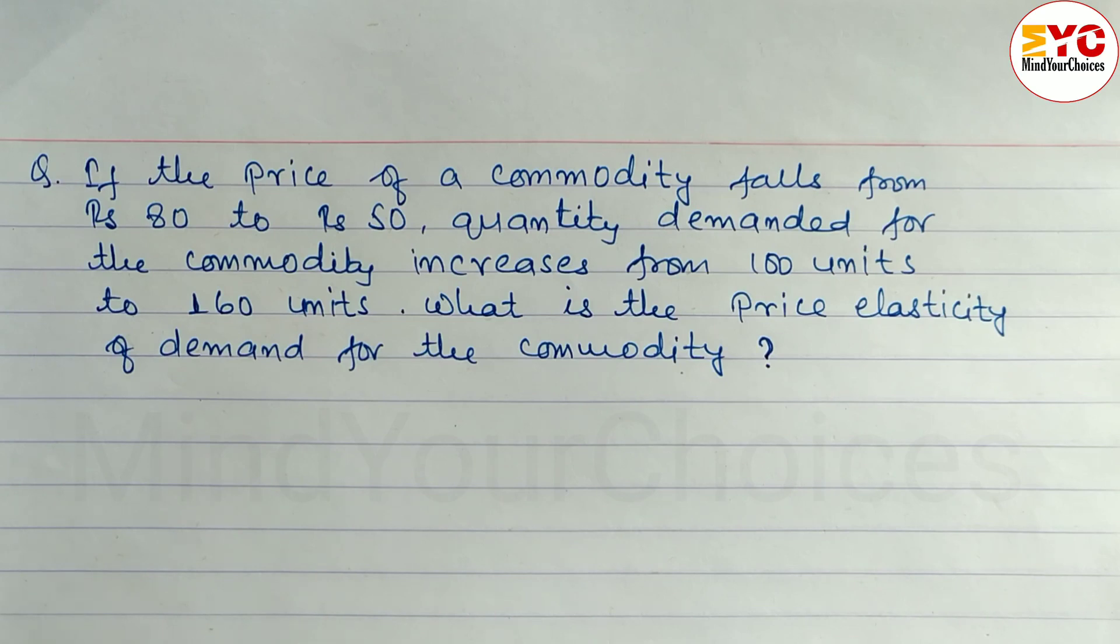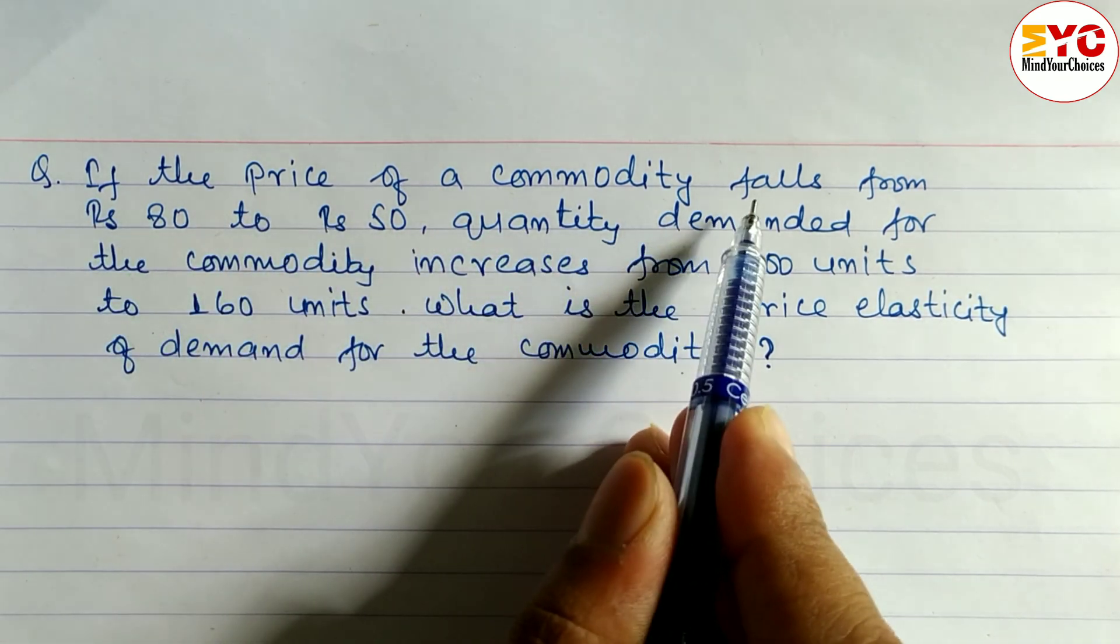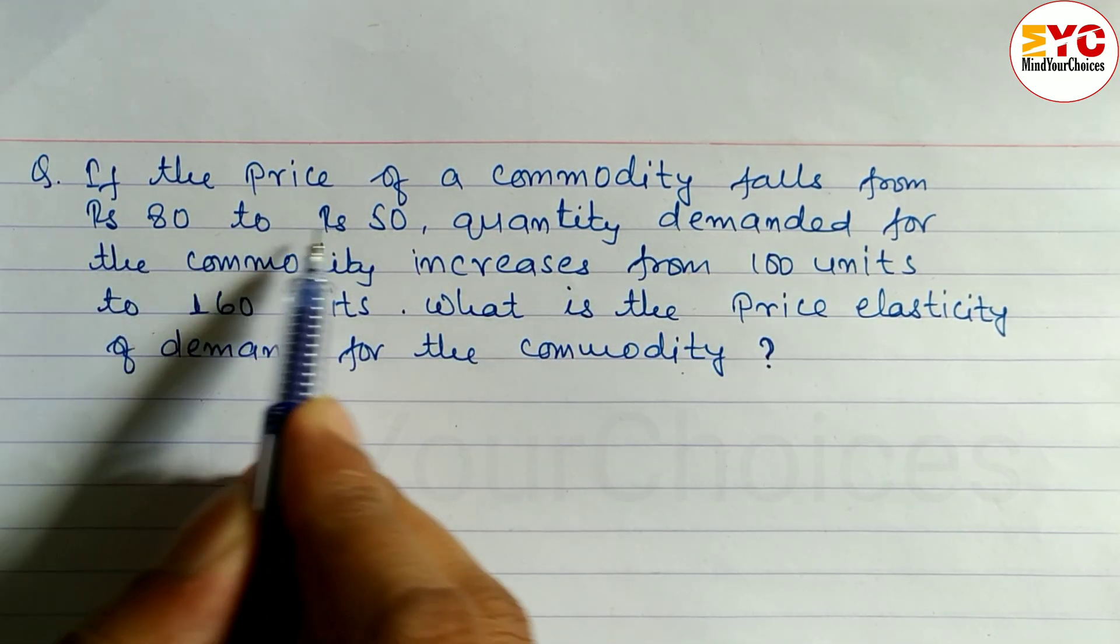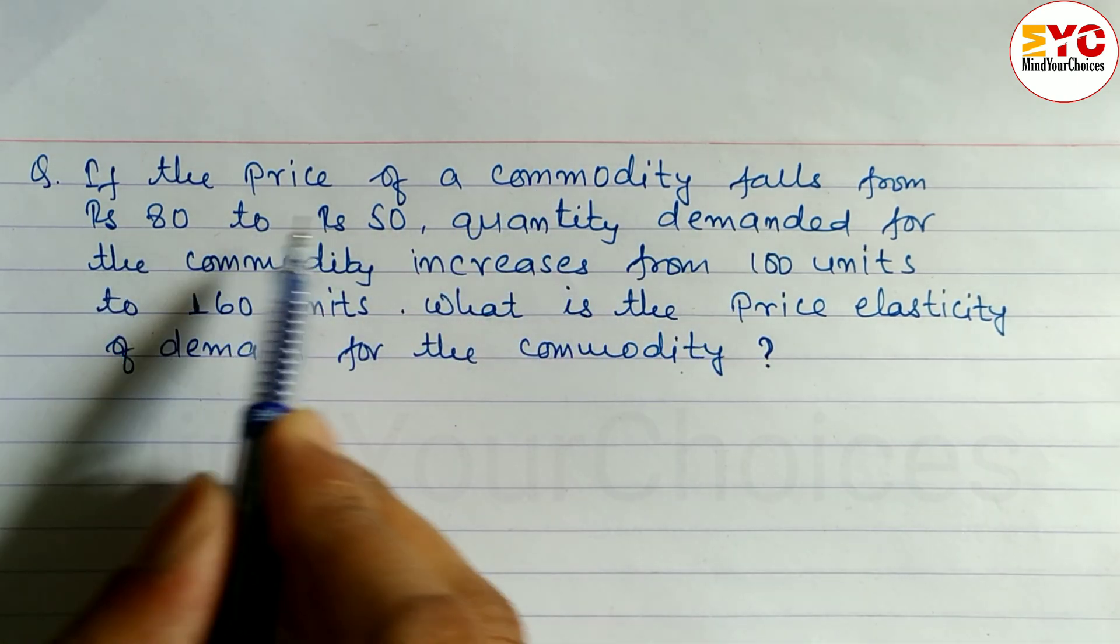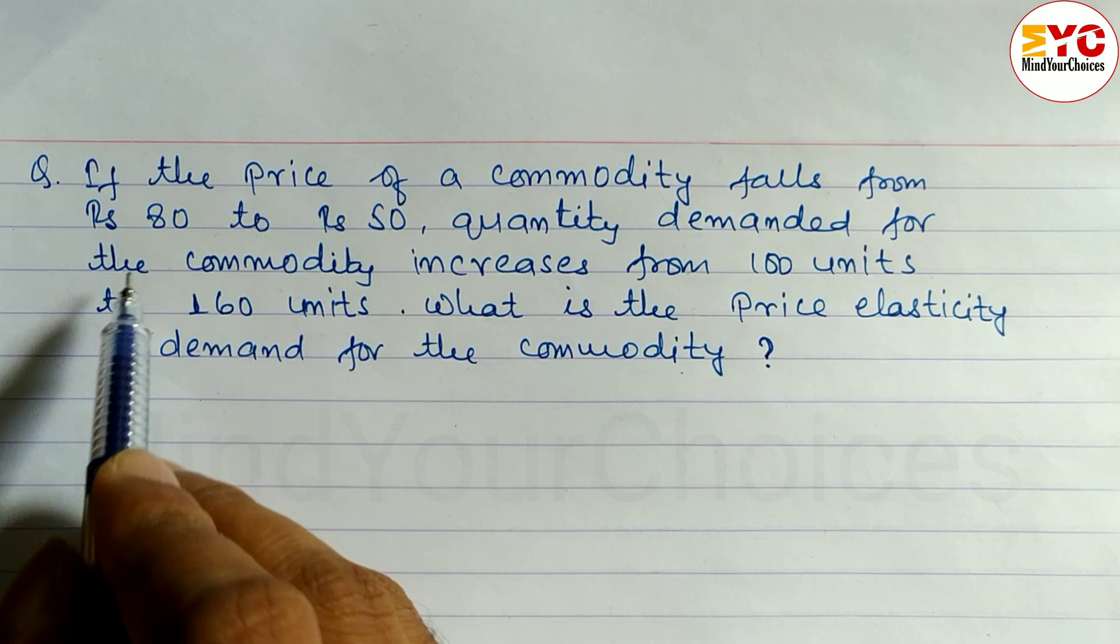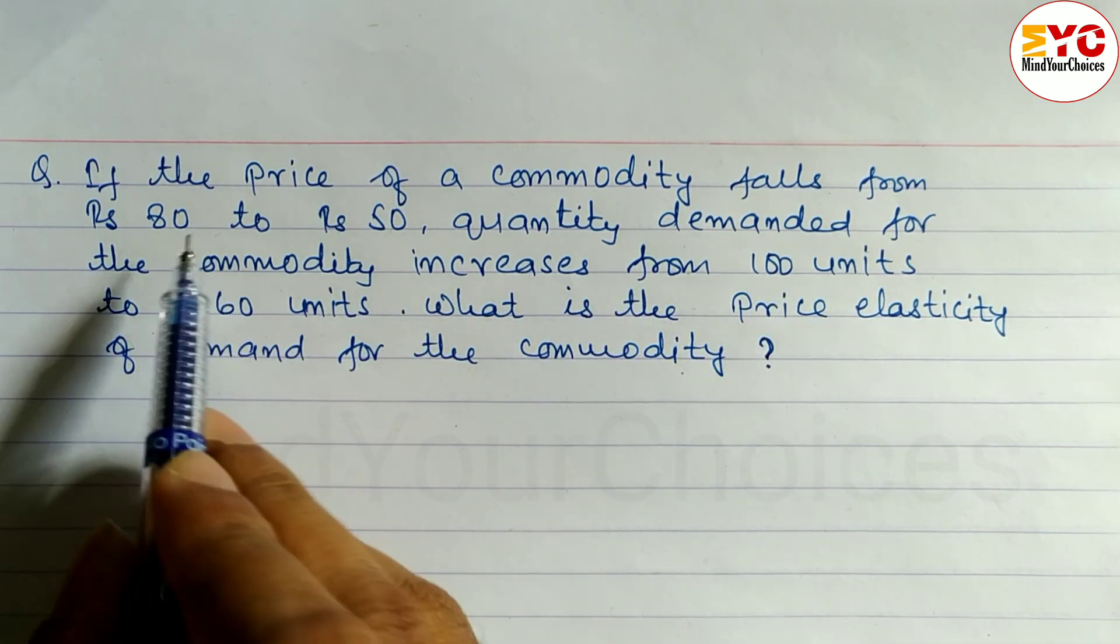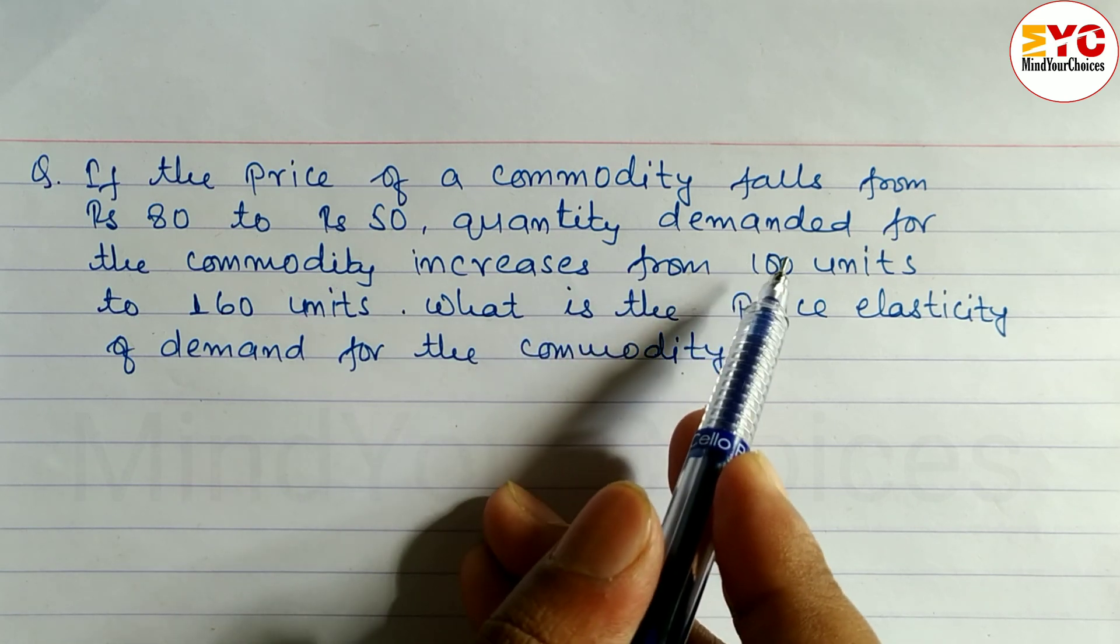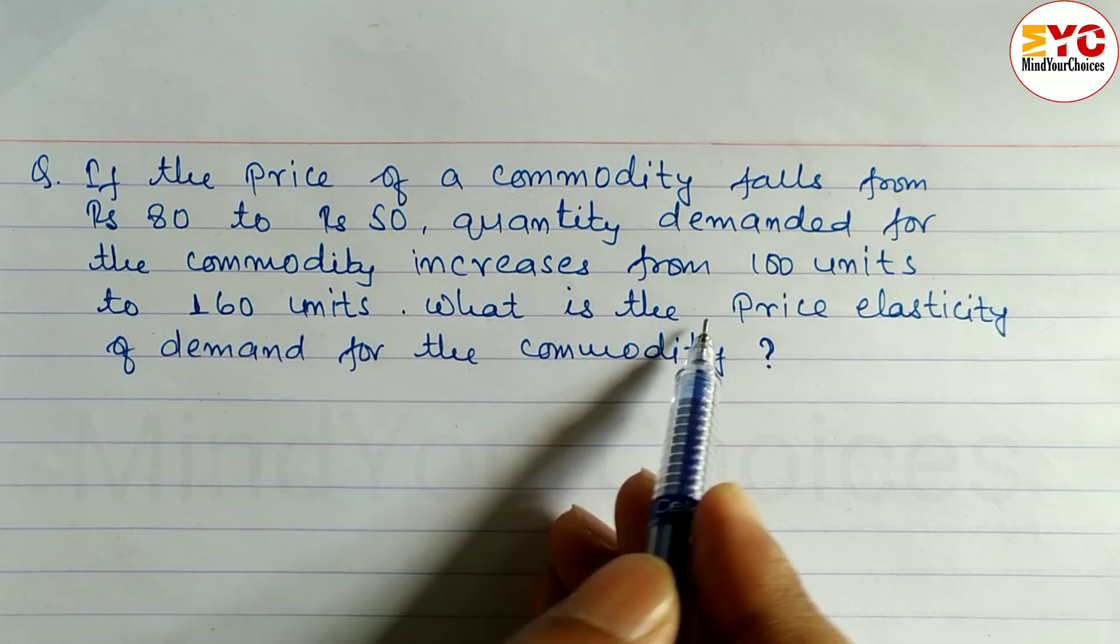Your question is from Class 11 Economics, elasticity of supply and demand. If the price of a commodity falls from rupees 80 to rupees 50, and quantity demanded for the commodity increases from 100 units to 160 units, what is the price elasticity of demand for the commodity?